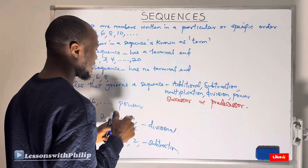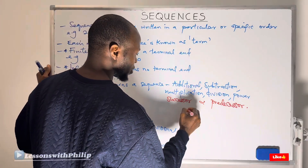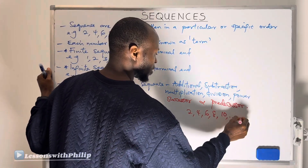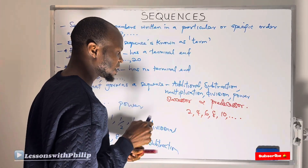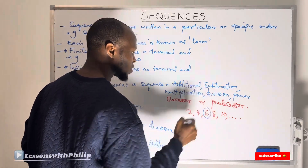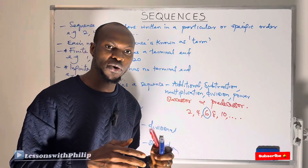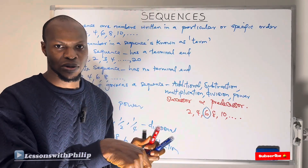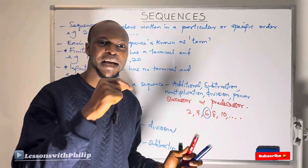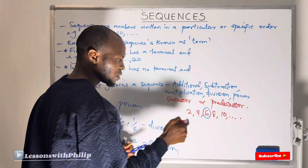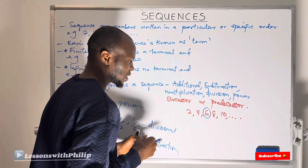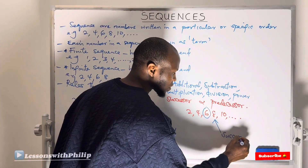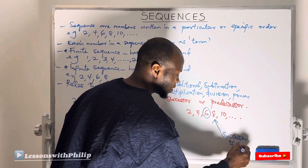For example, if I have the sequence 2, 4, 6, 8, 10, and I take a particular term which is 6 — a successor is a number that comes after a particular term. So the successor of 6 will be 8. My 8 will be the successor of 6.